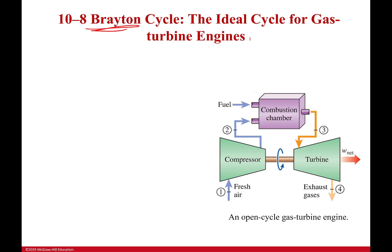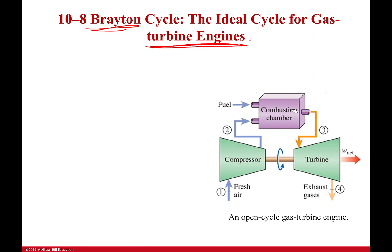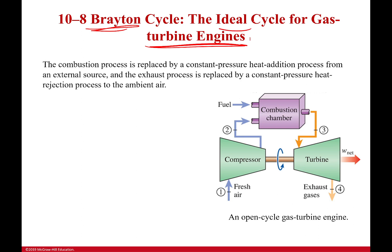The Brayton cycle is the ideal cycle for gas turbine engines, and gas turbines are producing most of the power for your home. It can also be coal-powered turbines — it's very similar because we don't really care what's being combusted. Since we're going to idealize this, we forget about the combustion chamber and just say that's a constant pressure heat addition process, and that exhaust process is just a constant pressure heat rejection process.